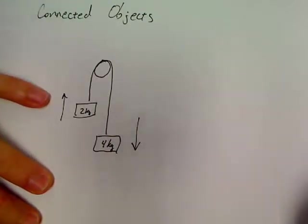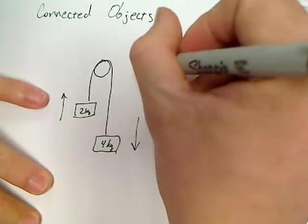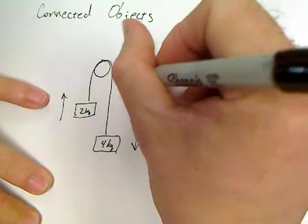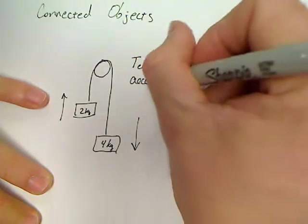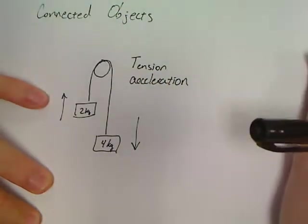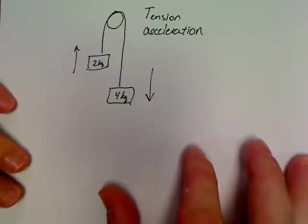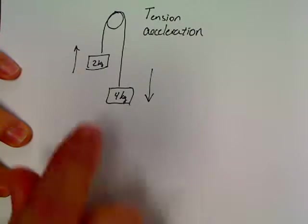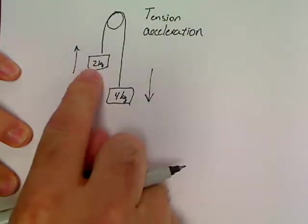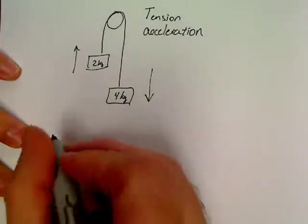Most of the time, we're going to ask you to find the tension and the acceleration. This is typically what you're going to be asked to find out of a connected object problem. When we go to do this connected object problem, what I need is a sum of the forces. I need a free body diagram and a sum of the forces for each of these objects.